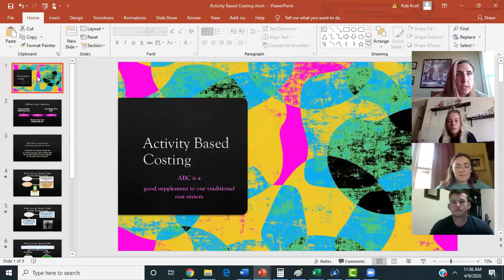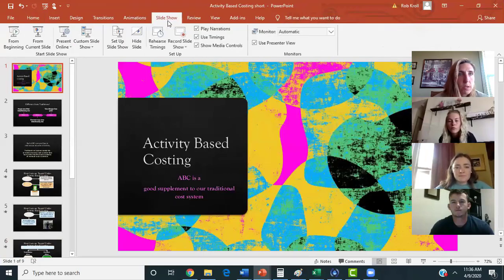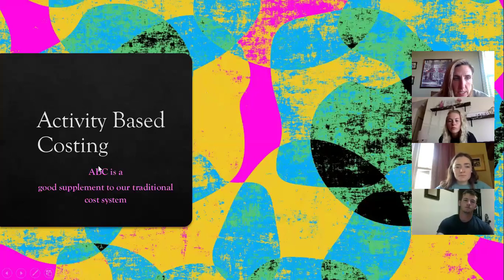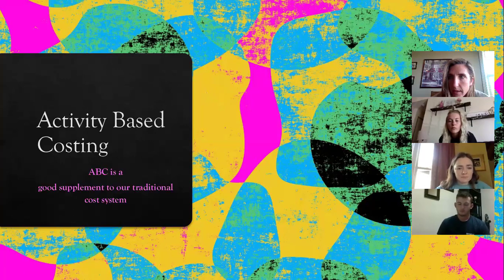The beginning of the slideshow should look like this: Activity-Based Costing. It says ABC is a good supplement.